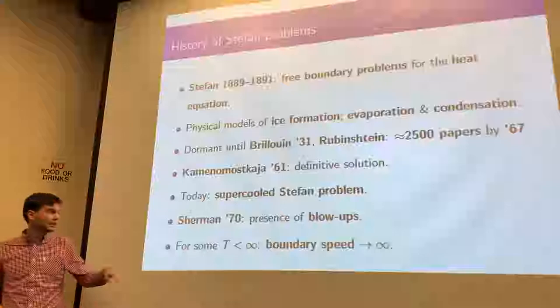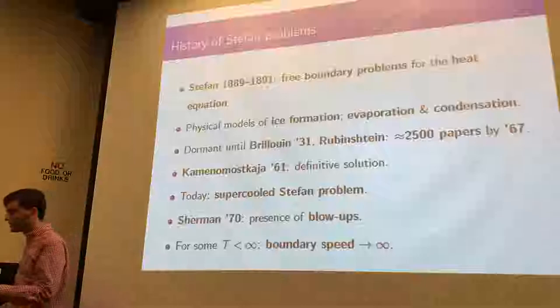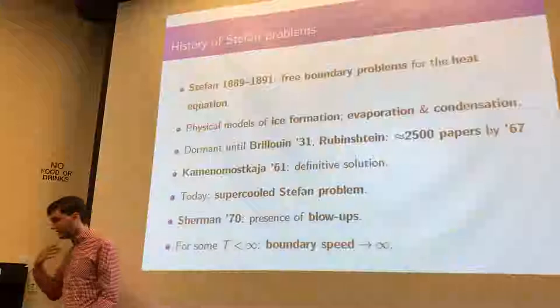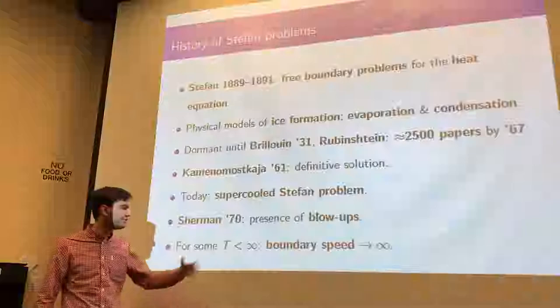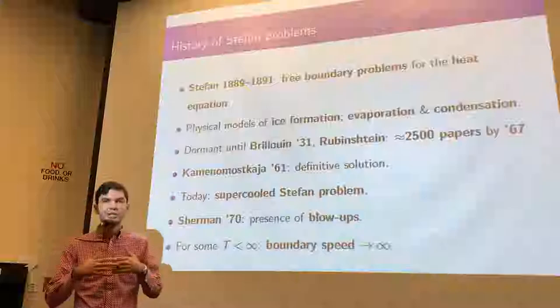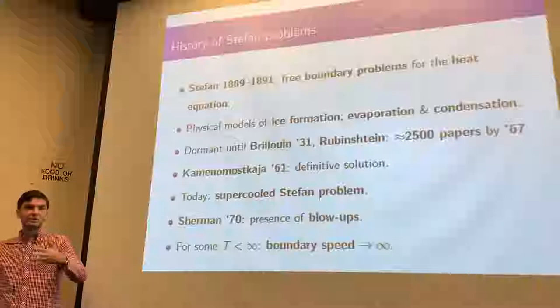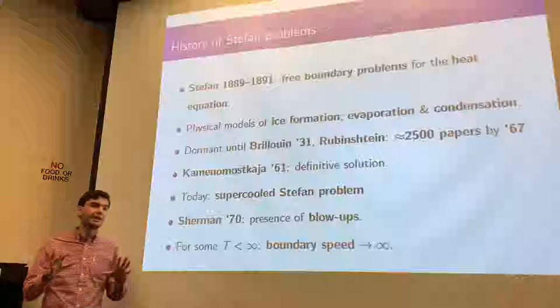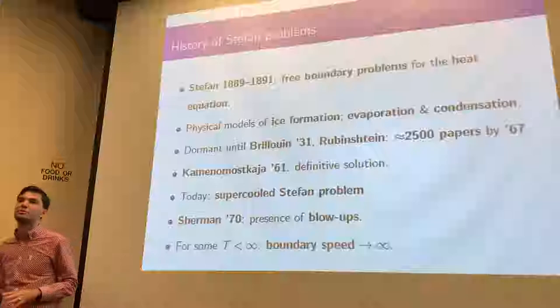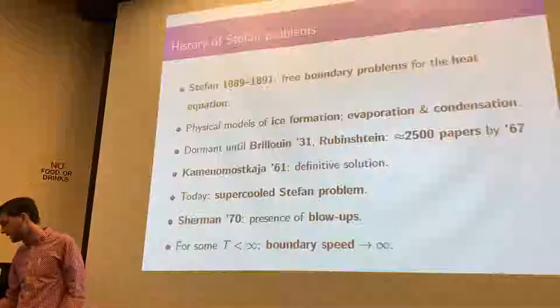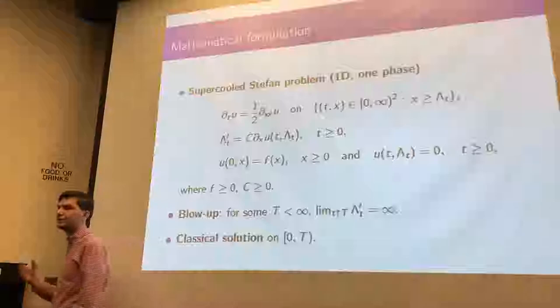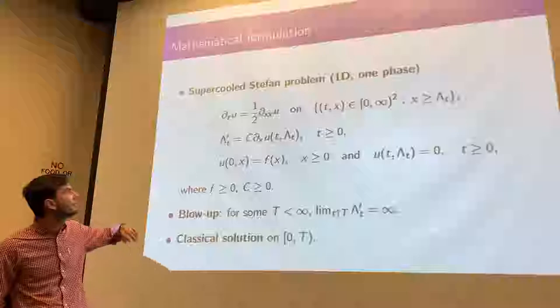The first paper on the supercooled Stefan problem appeared in the 1970s, and in that paper it was shown that there are blowups in the problem. If you formulate the equation for how the boundary is supposed to move, you will typically find some finite time T such that the speed of the boundary goes to infinity — the rate at which the ice grows will go to infinity at this finite time. This is basically where the PDE analysis stops: you have a solution up to this blowup time, and that's all the PDE literature could say. What I will try to explain today is that you can use probability to go beyond that and construct global solutions of this problem.